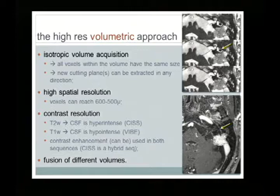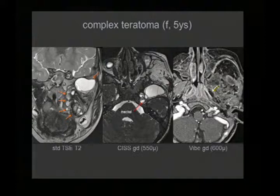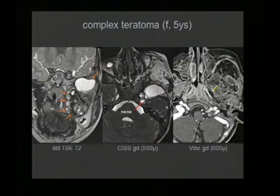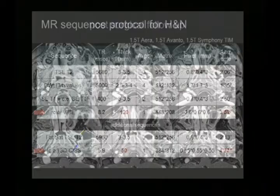The final step is discussing how different volumes can be fused to provide additional information. In this case of a young patient with a complex teratoma, the planning considers the lesion extending to the skull base, changes in the Meckel cave and soft tissues, and a collection located very close to the eustachian tube. High-resolution technique demonstrates in follow-up an infected fluid sac connected to the eustachian tube.